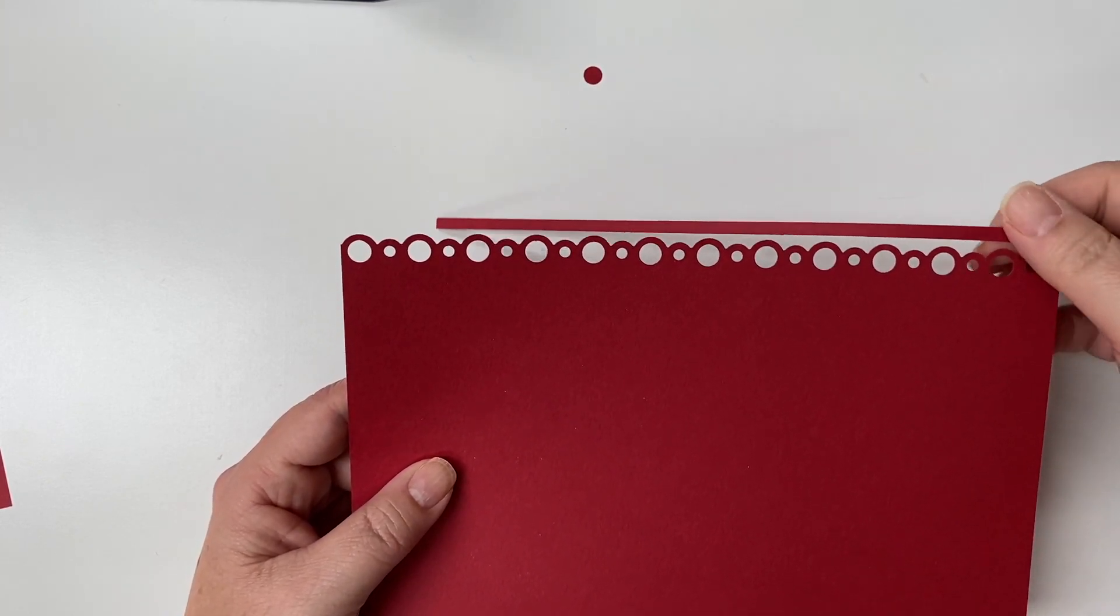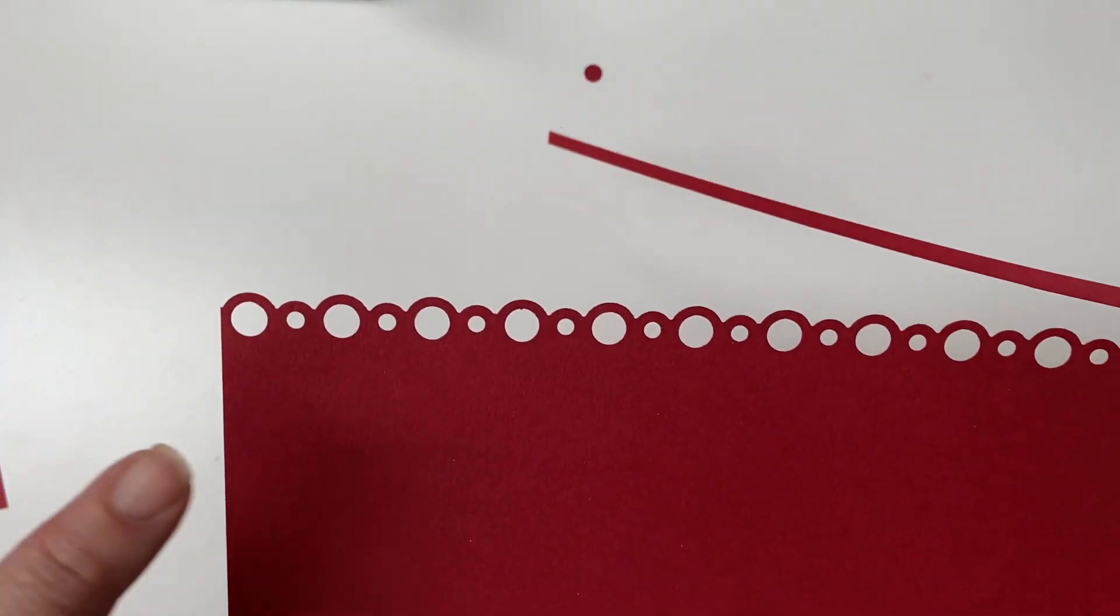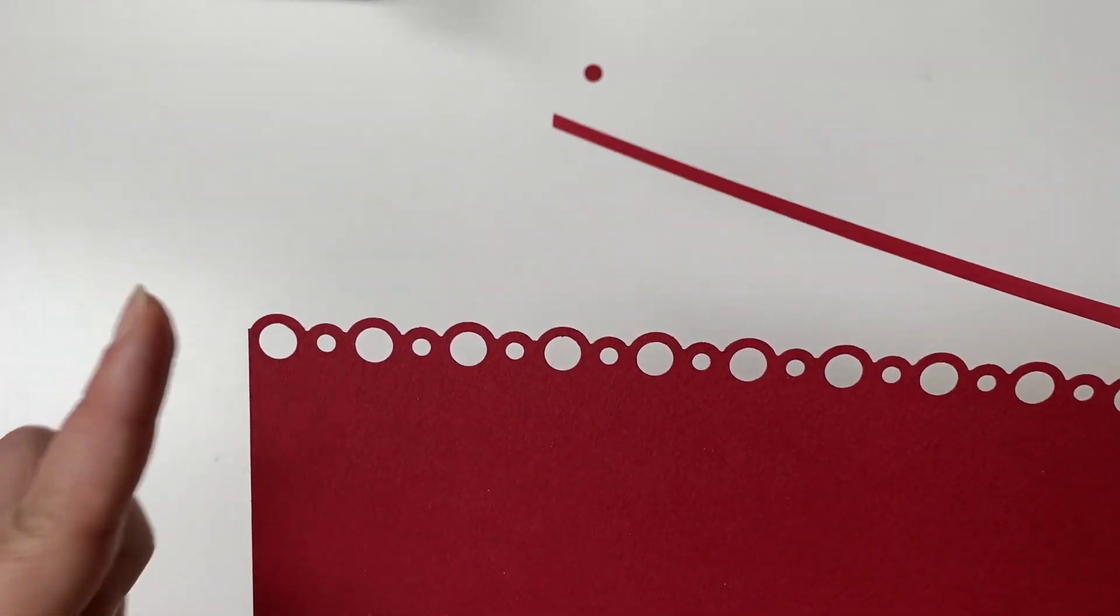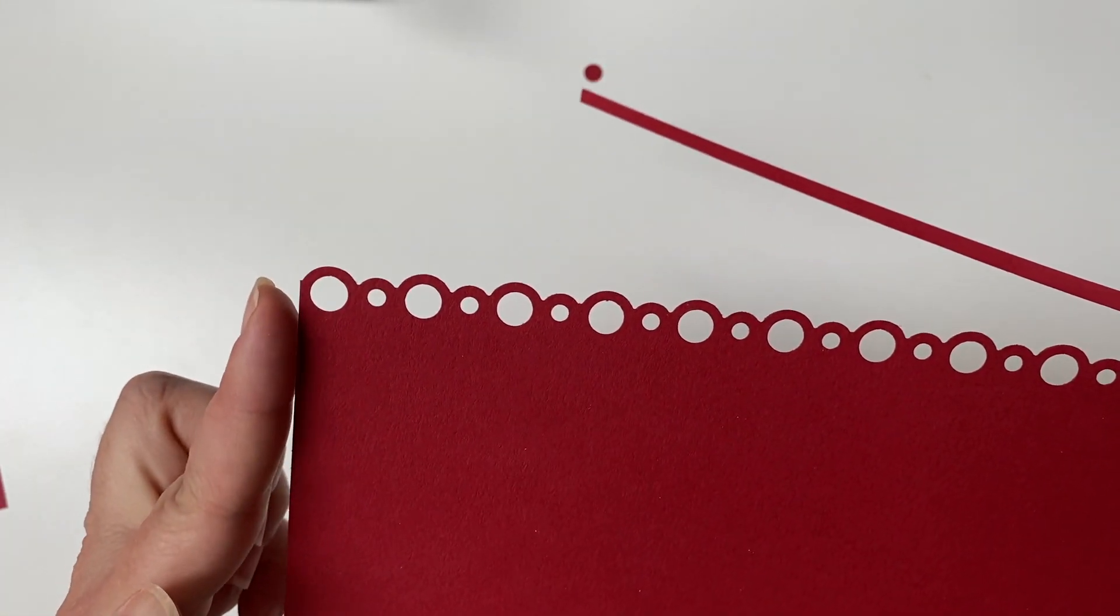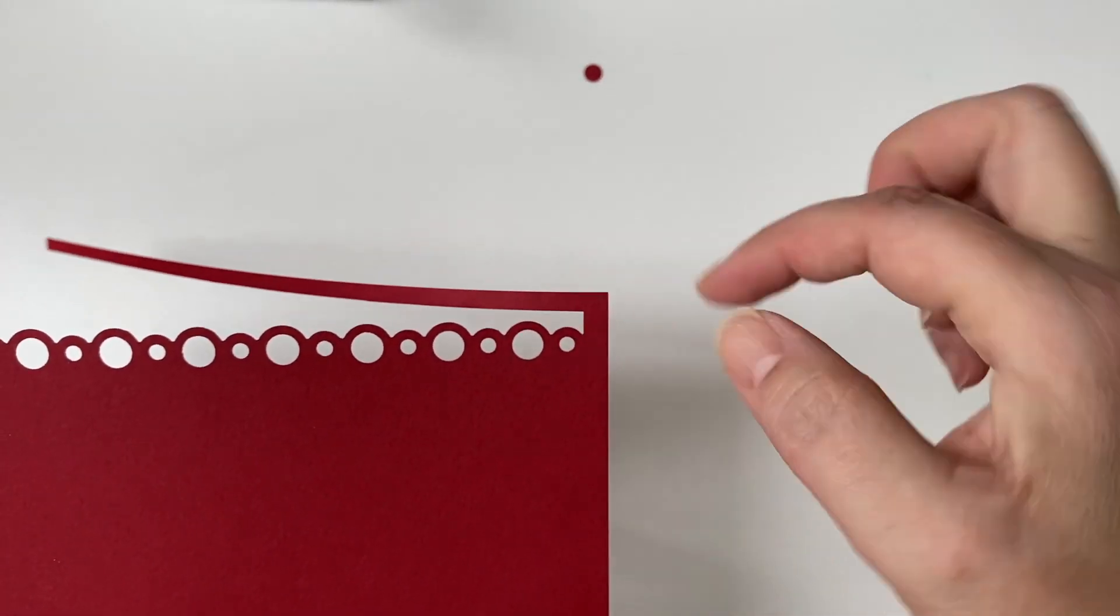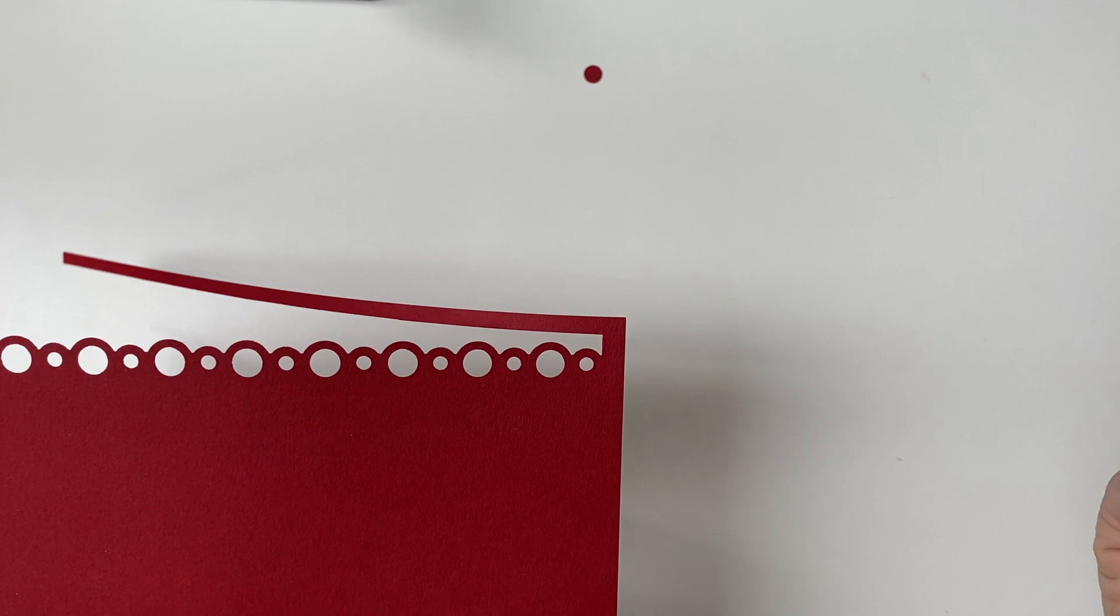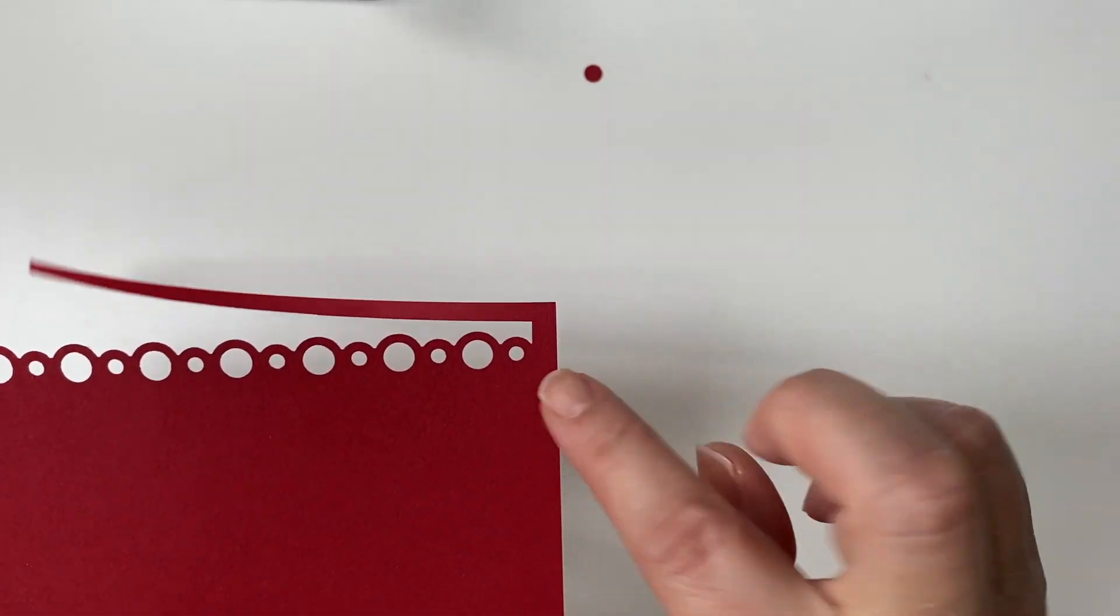So what you're going to notice when you punch your paper is, unless your paper is exactly the right size, you're going to have one side, the left side, that's perfect. It starts with one whole punch pattern. The right side may not, and that's because it depends on how long your paper is to be able to get it to cut off right at the exact size.